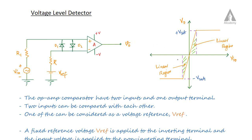In open loop configuration the operational amplifier gain is very high. The gain is on the order of 10 raised to 5. We have a differential input voltage and the output voltage can be very large. The output is clipped at the maximum output voltage, which is the saturation voltage.